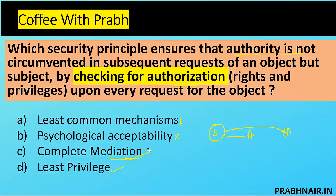A third example is NAC — network access control. Any user who wishes to be part of an enterprise must first get authorization from NAC. Unless NAC verifies their baseline compliance, no IP address is assigned. NAC first verifies, validates, and checks whether the system is compliant with the baseline, then authorizes the system for access. Without authorization, they cannot access anything. This is where we follow complete mediation.